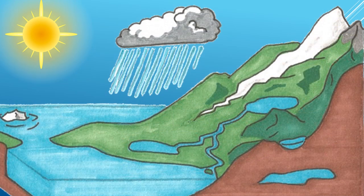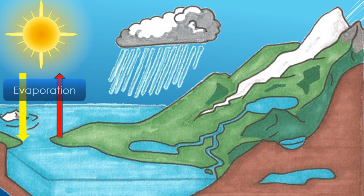The process of heating and cooling water is called the water cycle. The heat from the sun causes the water to evaporate into a gas or water vapour. As the vapour rises it cools down into water droplets, forming a cloud. This is called condensation.